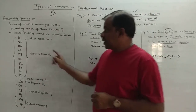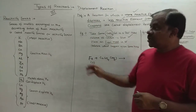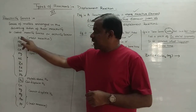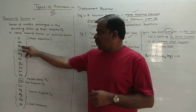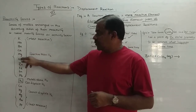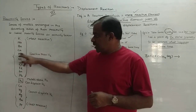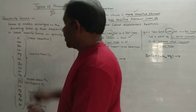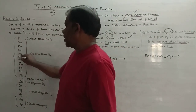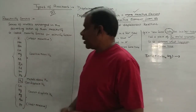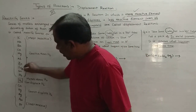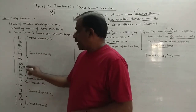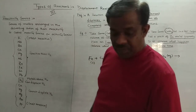We learn all this in order to understand displacement reaction. The most reactive element is potassium, followed by sodium, barium, and calcium. If we consider magnesium, the elements above magnesium are more reactive than it, and those below are less reactive. Similarly, if we consider iron, elements above iron can displace iron from its solution, and those below iron cannot.